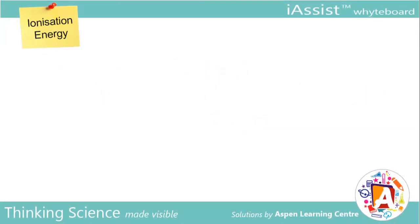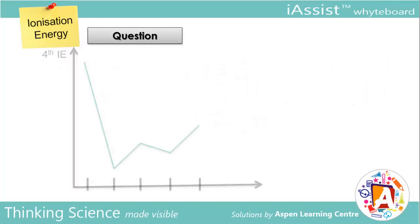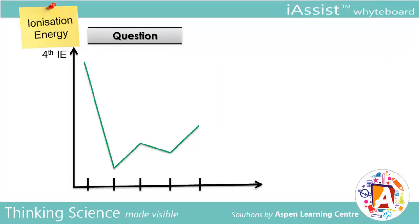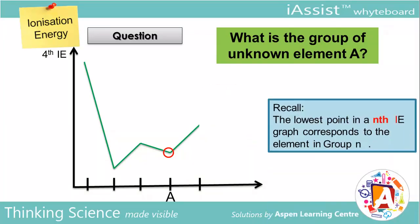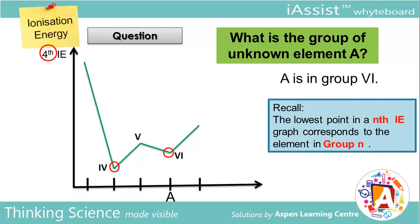Now let's try a worked example. Let this be the graph of the fourth ionization energies of several unknown elements. What group does element A belong to? Recall, the lowest point in an nth IE graph corresponds to the element in group N. Hence, the lowest point in the fourth IE graph corresponds to the element in group 4. Counting from the lowest point, we can determine that element A is in group 6.